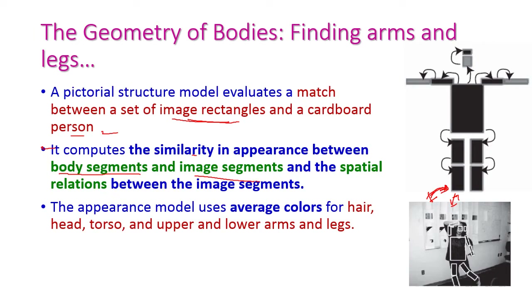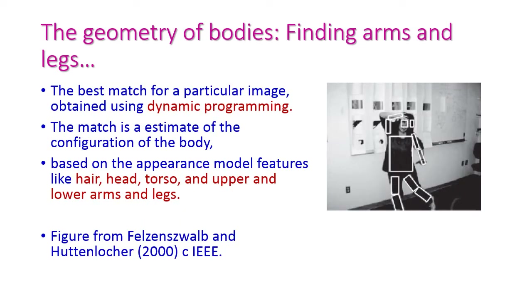The model computes the similarity in appearance between body segments and image segments, as well as the spatial relations between the image segments. The cardboard person model uses the average color for hair, head, torso, upper and lower arms, and legs. Dynamic programming is very helpful to match a particular person with the cardboard person model. The match estimates the configuration of the body based on appearance model features like hair, head, torso, upper and lower arms, and legs.